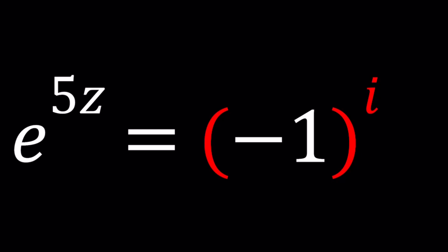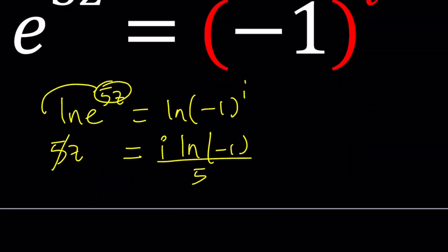Easy, right? It's like easy. If I had e to the z, that would be awesome. But just ln on both sides, right? A lot of times people are like, oh, that's easy. I just ln on both sides. And then bring these to the front 5z, ln of e is 1, so don't worry about it. i times ln of negative 1. And then divide both sides by 5 and case closed. That's it, right?